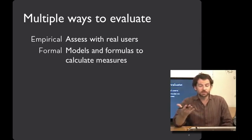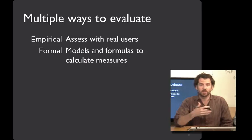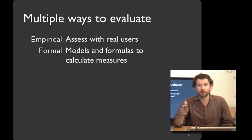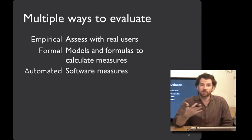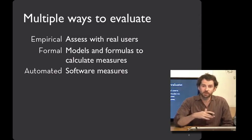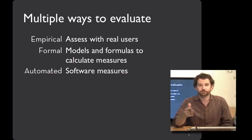It's also possible to have formal methods where you're building a model of how people behave in a particular situation, and that enables you to predict how different user interfaces will work. Or, if you can't build a closed-form formal model, you can also try out your interface with simulation and have automated tests that can detect usability bugs and effective designs. This works especially well for low-level stuff; it's harder to do for higher-level stuff.